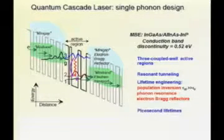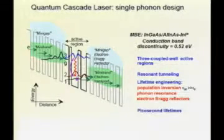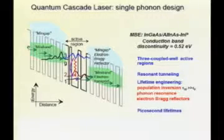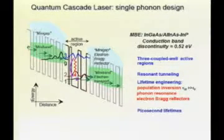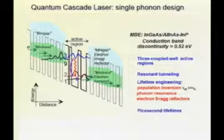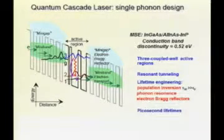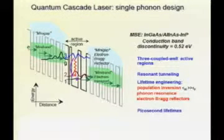I'm going to discuss in a bit of detail how it works. This is a so-called single phonon design. This is the energy diagram of the conduction band as a function of position inside the material. This is the core, the active region. These wavy things are the square of the wave functions. Essentially, we control the layer thickness to design the wavelength.